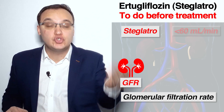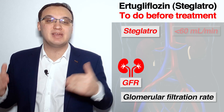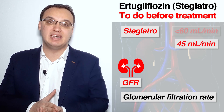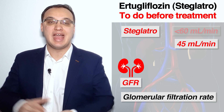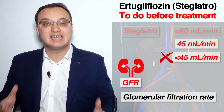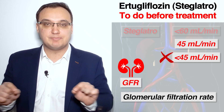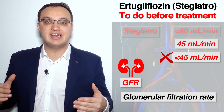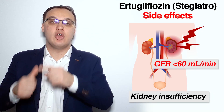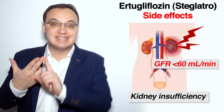Once Steglatro has been started, if the GFR later falls below 60 milliliters per minute, the medication can still be continued until the GFR reaches 45 milliliters per minute. If the GFR goes below 45, the medication must be stopped completely. This means the contraindication is kidney insufficiency with a GFR of less than 60 at initiation.